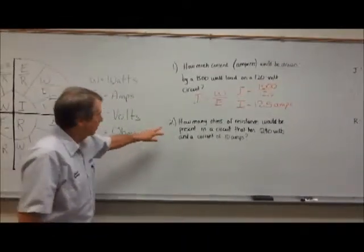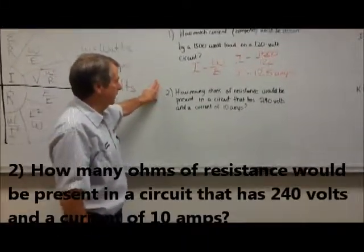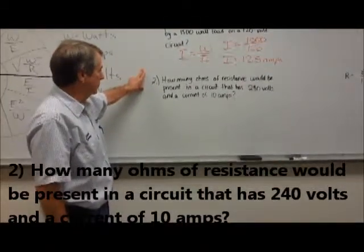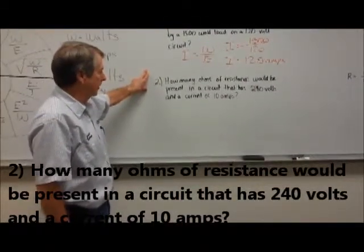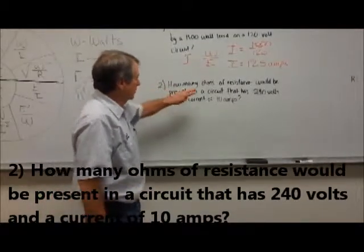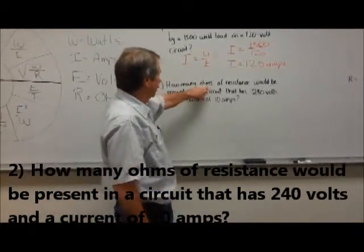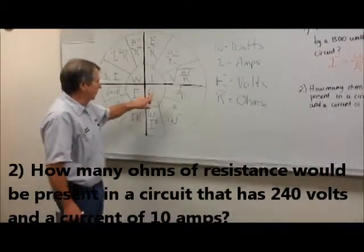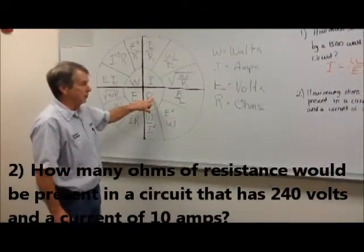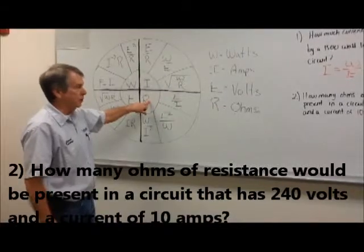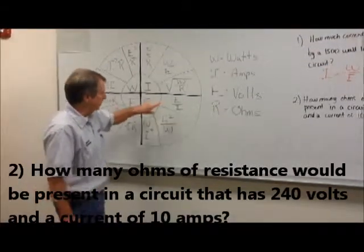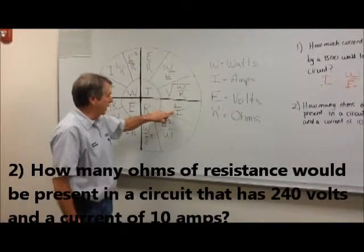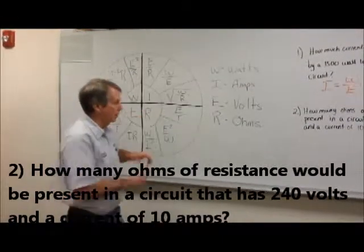Our next problem is how many ohms of resistance would be present in a circuit that has 240 volts and a current of 10 amps. So when we are looking at this we want to solve for resistance. We go to our Ohm's law wheel — we know that we have volts and we have amps, so we are going to use the formula E divided by I is equal to R.